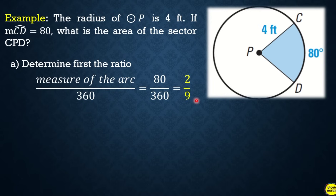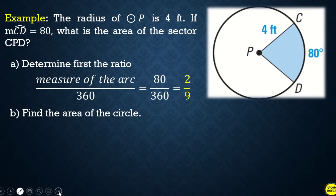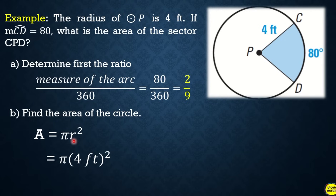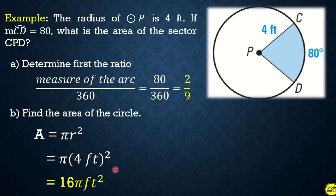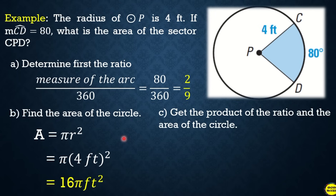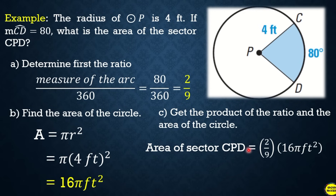Next, find the area of the circle using the formula pi r squared. The radius is 4 feet, so that is pi times 4 squared, which equals 16π square feet. Now multiply the ratio and the area: (2/9) times 16π square feet. Therefore the area of sector CPD is 32 over 9 square feet, approximately 32π/9 sq ft.